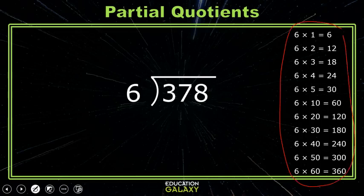I'm looking for 6 times what is 378? I know 6 times 50 is 300, so I can write the 50 here, and then subtract 378 minus 300. That gives me 78.